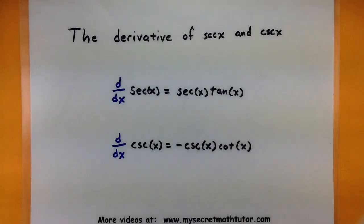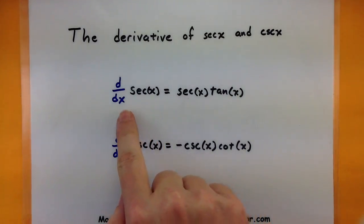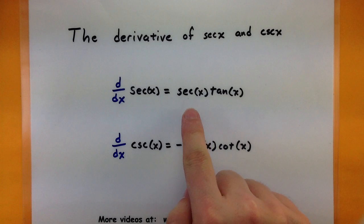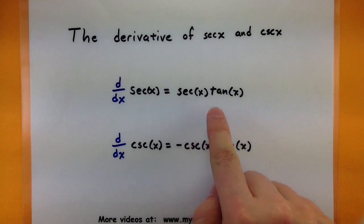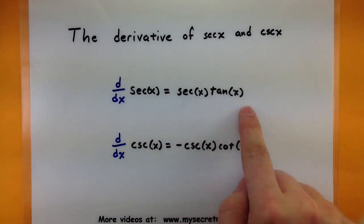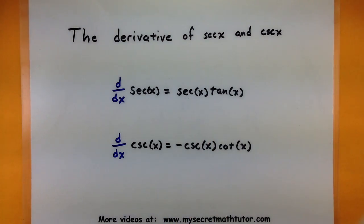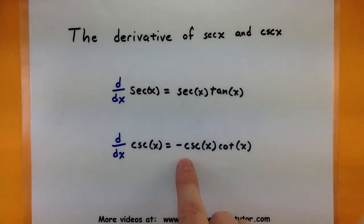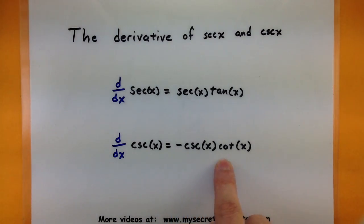When you take the derivative of secant, it simply turns into secant of x multiplied by tangent of x. Now when you take the derivative of cosecant of x, it turns into negative cosecant of x multiplied by cotangent of x.